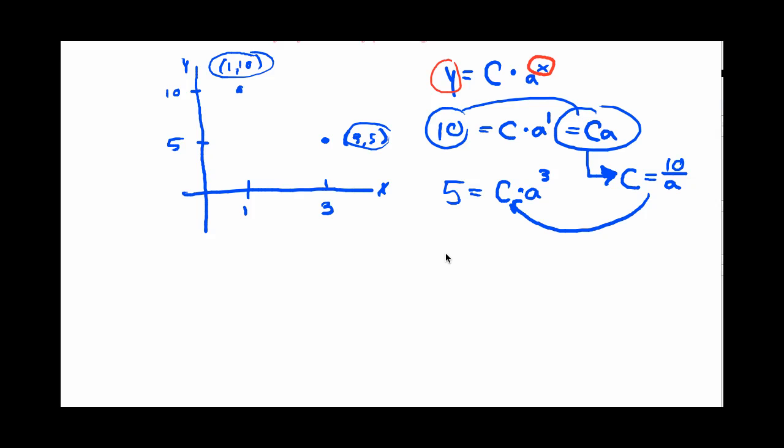Let's substitute that C in and I would get 5 equals 10 over a times a cubed. And I like the way this is going because now I have an equation that involves just one variable. And typically we can solve those, so let's simplify a little bit.